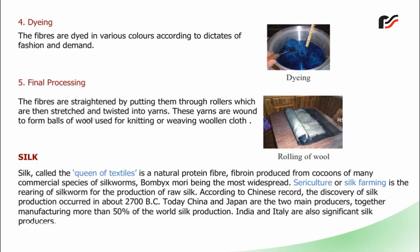Silk, called the queen of textiles, is a natural protein fibre. Fibroin is produced from cocoons of many commercial species of silkworms, with Bombyx mori being the most widespread. Sericulture or silk farming is the rearing of silkworms for the production of raw silk. According to Chinese records, the discovery of silk production occurred in about 2700 BC. Today, China and Japan are the two main producers, together manufacturing more than 50% of the world's silk production. India and Italy are also significant silk producers.